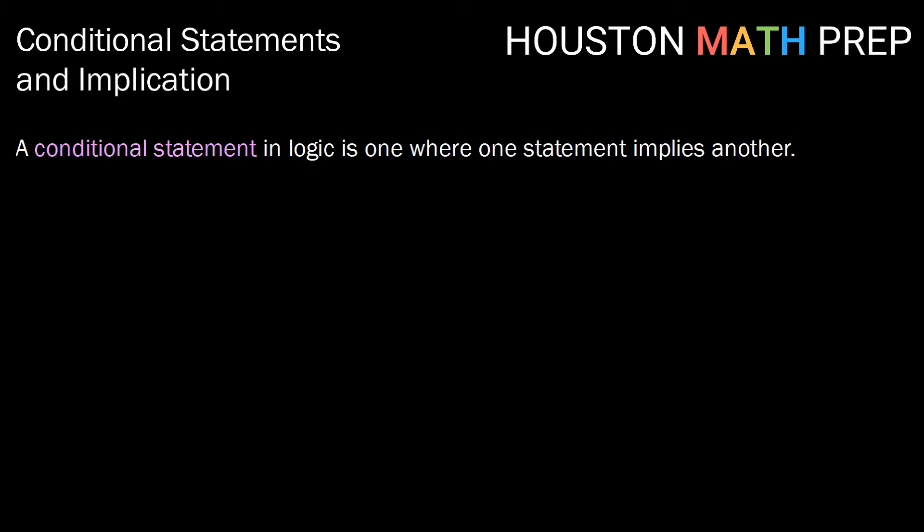A conditional statement in logic is one where one statement implies another statement. We write that as P arrow Q, which is read 'P implies Q,' or 'if P, then Q.'